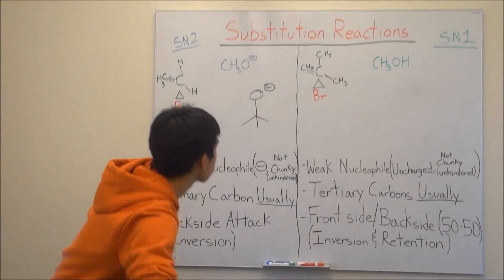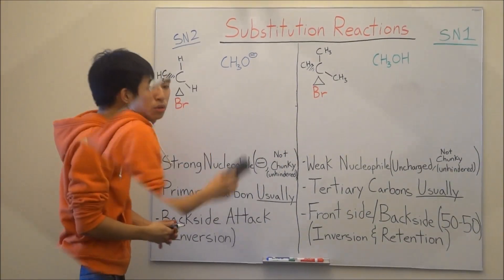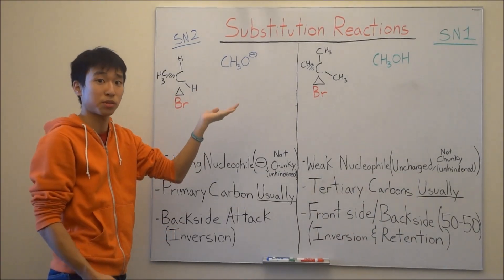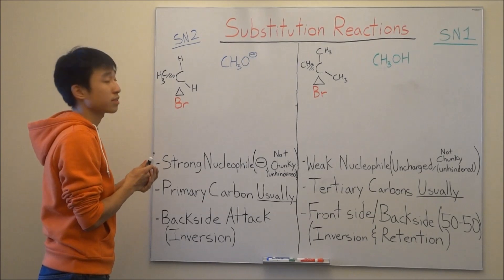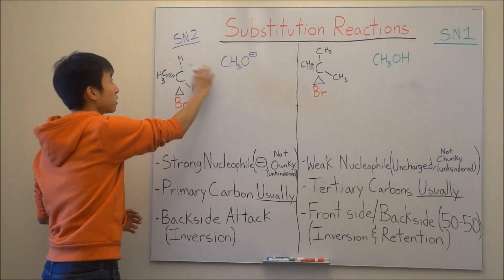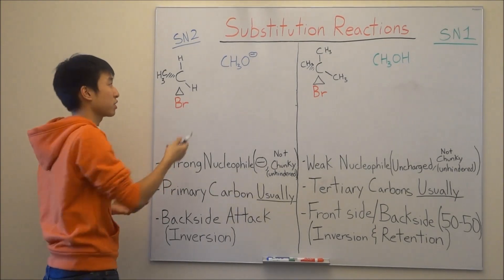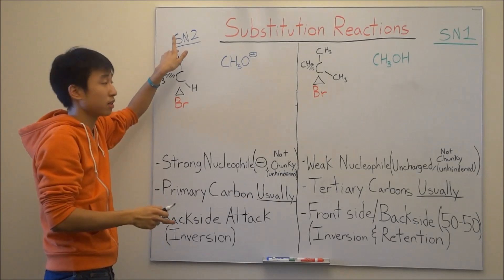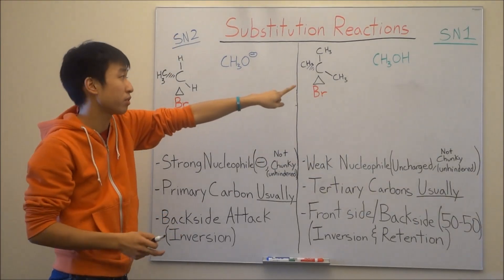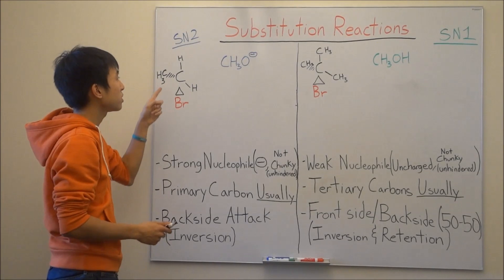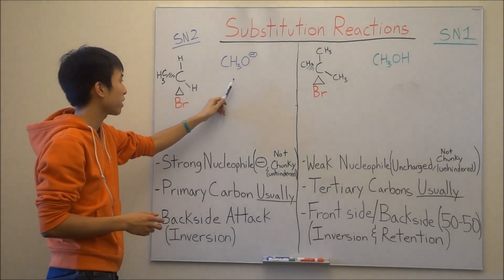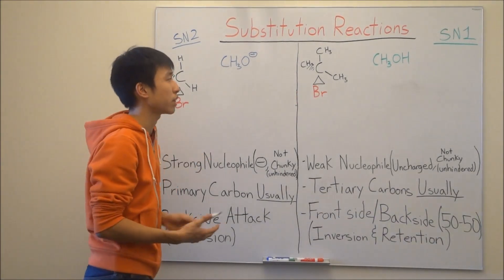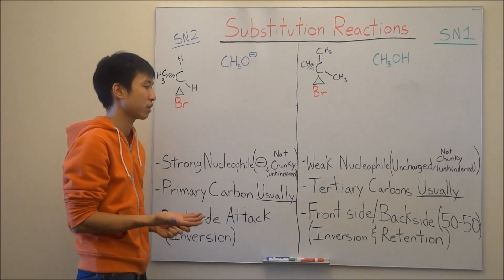Now that you know what a nucleophile is, I just want to explain why it's called SN2 and SN1 in the first place. The SN is there because N stands for nucleophile and S stands for substitution — your nucleophile is going to substitute your leaving group. The 2 stands for both the nucleophile and the leaving group having an effect on how fast the reaction occurs, and the 1 stands for only the leaving group having an effect on how fast the reaction occurs.